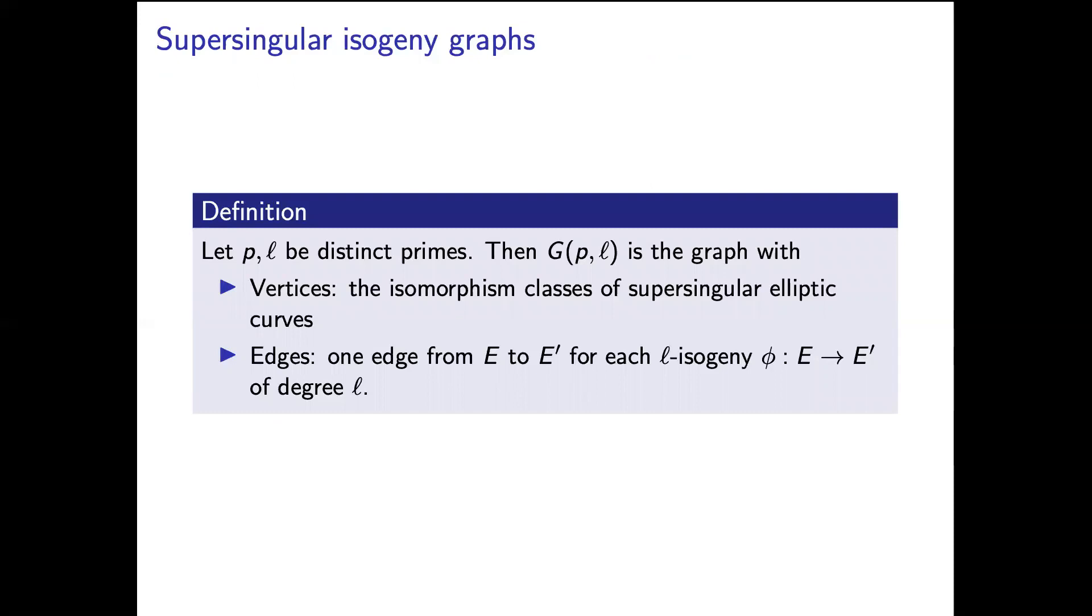We're going to do it in part at least with isogeny graphs. So this is a common theme for computing endomorphism rings of any elliptic curve over a finite field. We're going to use the supersingular isogeny graph.